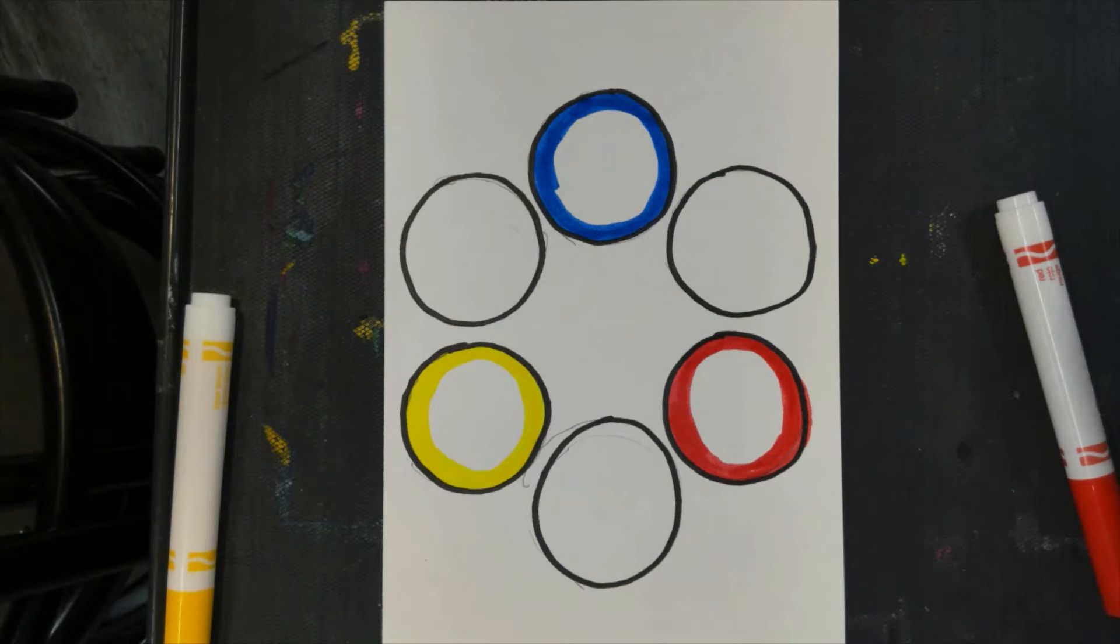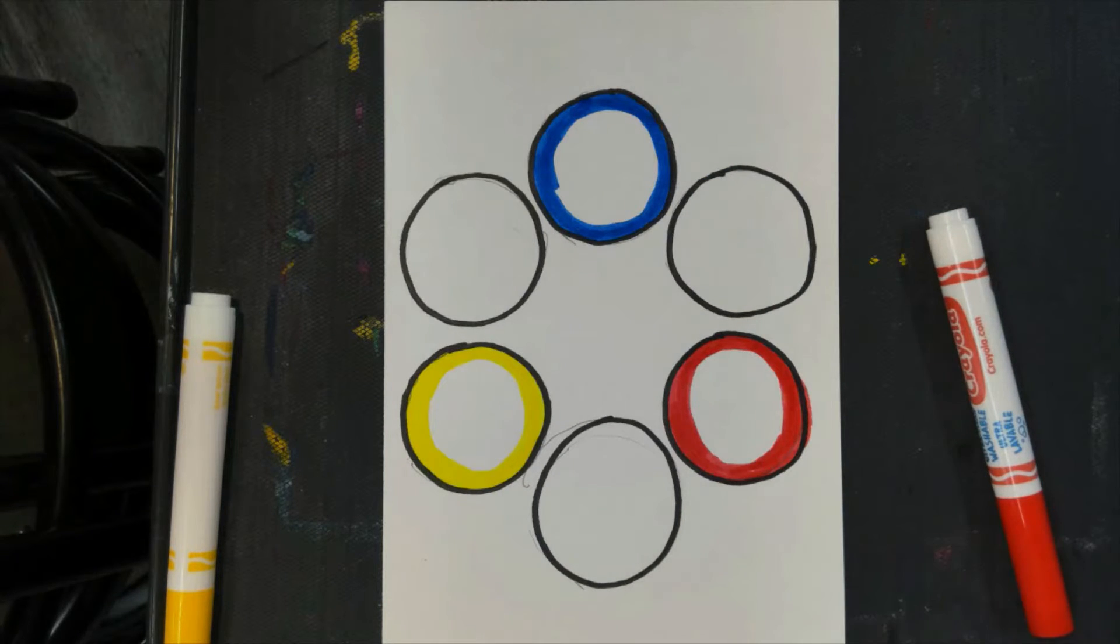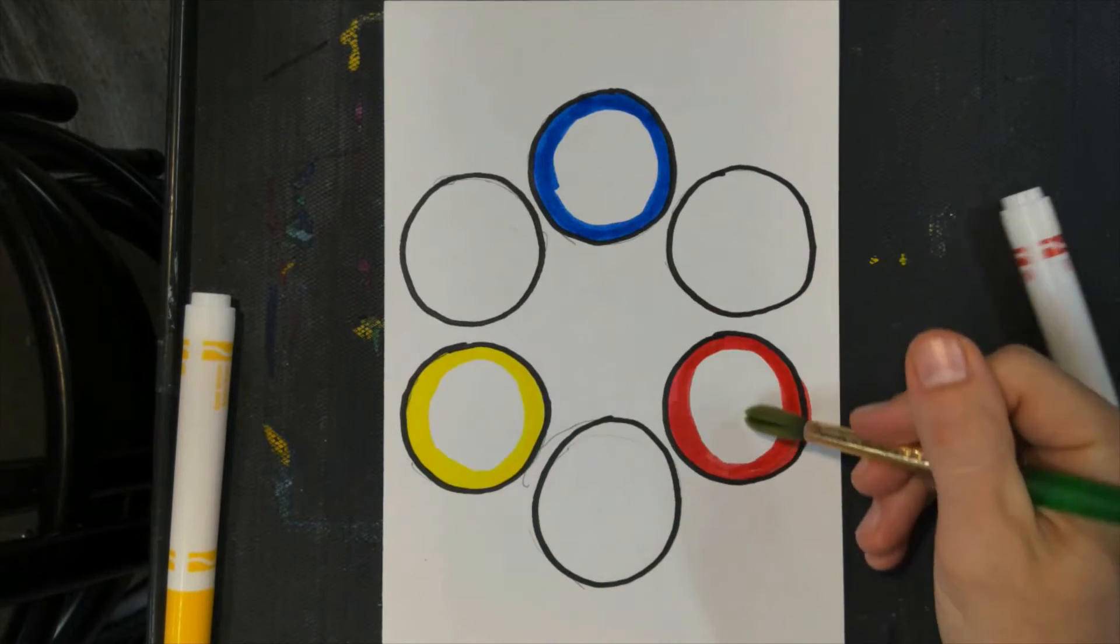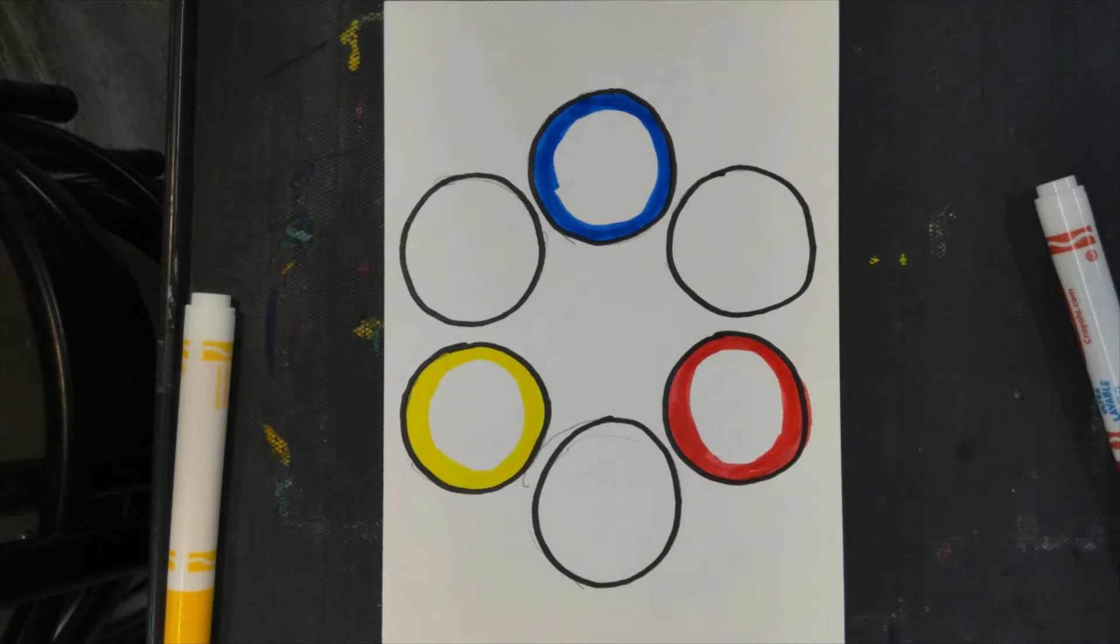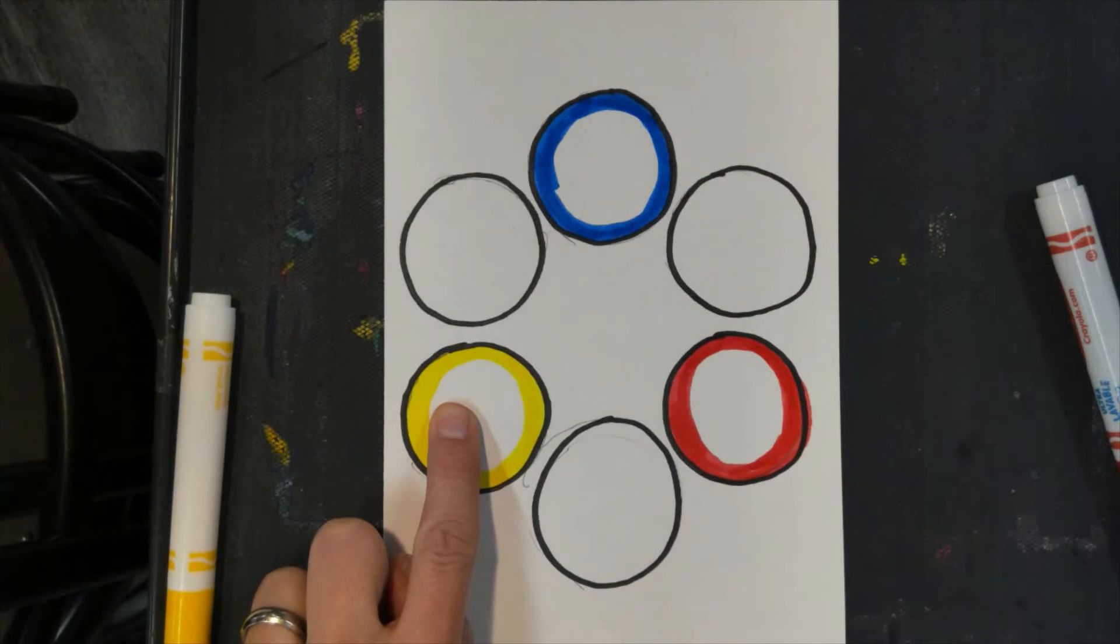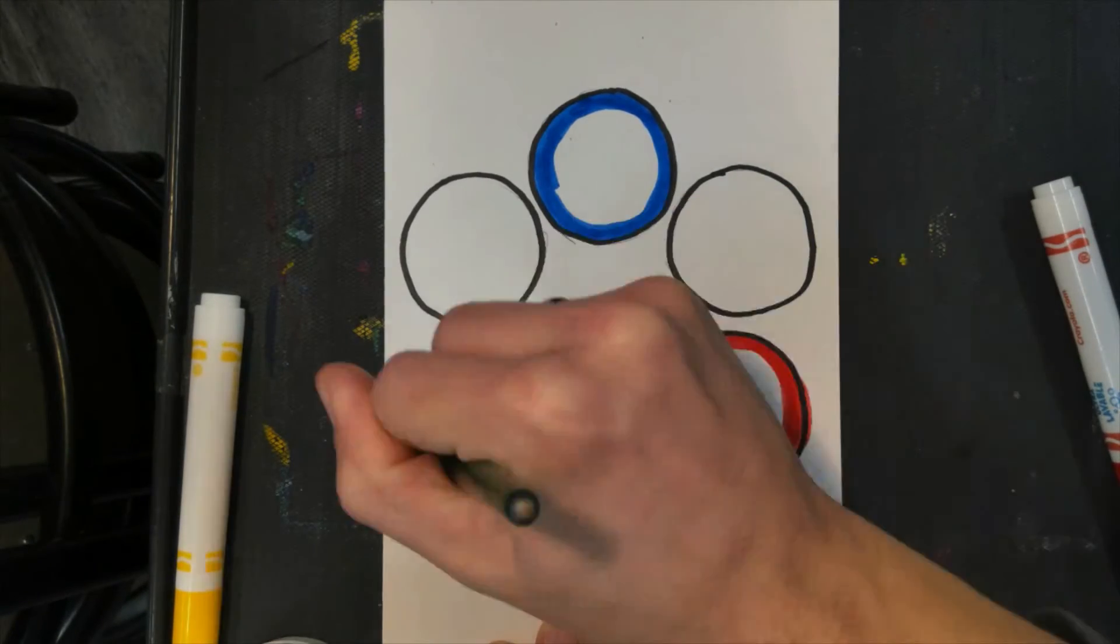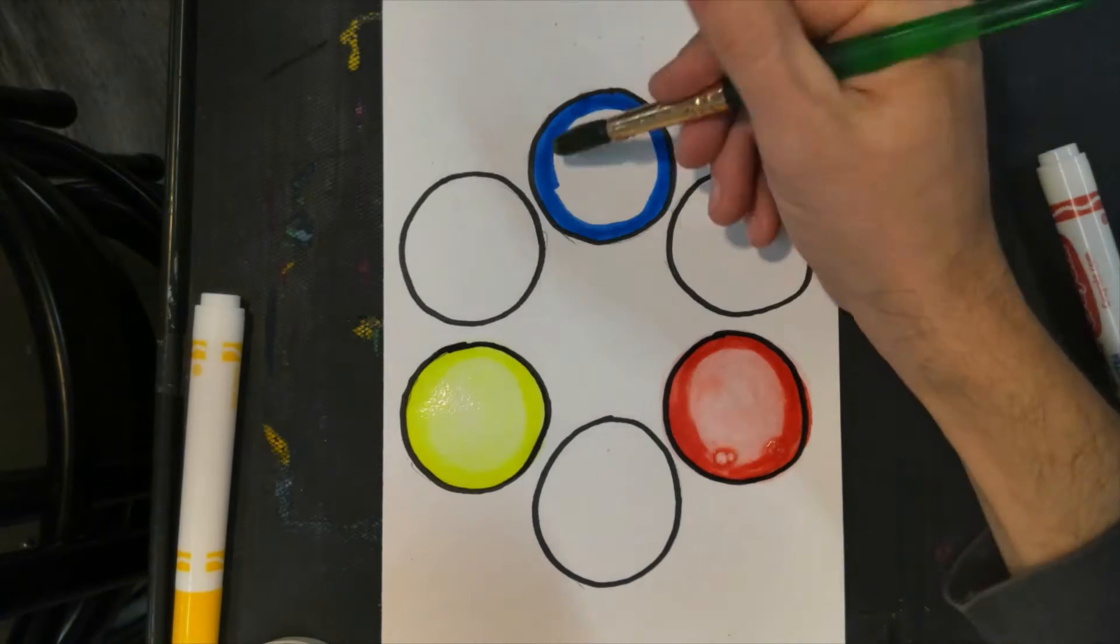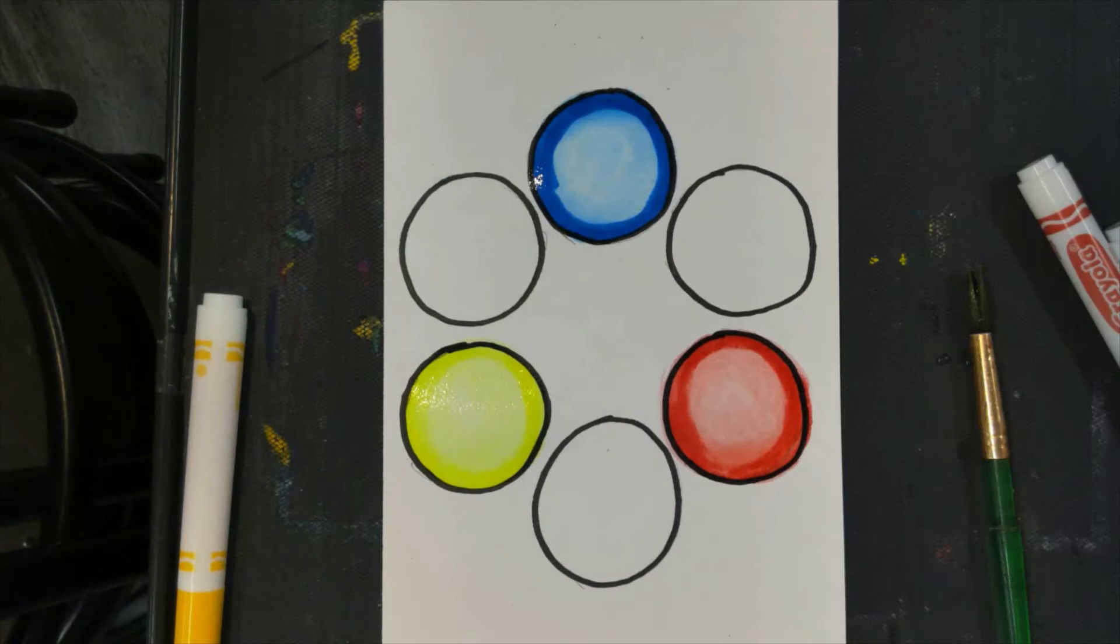All right, now I'm going to use some plain clear water and my paintbrush and I'm going to brush water here, here and here and fill those in. I'm going to rinse my brush off in between so I don't mix the colors up because I want this to just be yellow, this just to be red and this just to be blue.